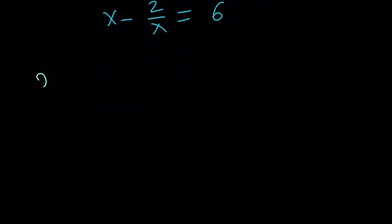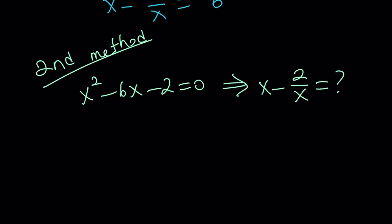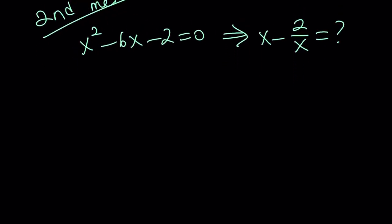So, remember the original problem was given as x squared minus 6x minus 2 equals 0, and we're supposed to find x minus 2 over x. We're supposed to evaluate it, so we will find the numerical value. You already know the answer, but just pretend you haven't seen the first method.